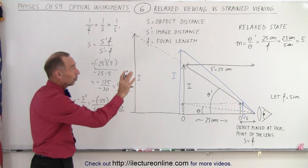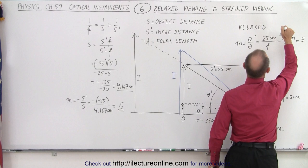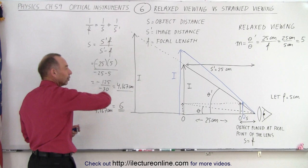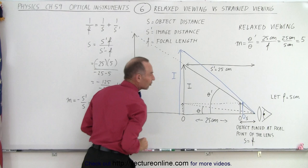So when we use a relaxed state or perhaps relaxed viewing, maybe I'll just write the word viewing to be in sync with my title. So when we use relaxed viewing, you can see that you allow the image to float off to a very large distance away. The relative height to distance will still be the same, so this angle, theta prime, doesn't change. And therefore, we can calculate the magnification using relaxed viewing to be 5.